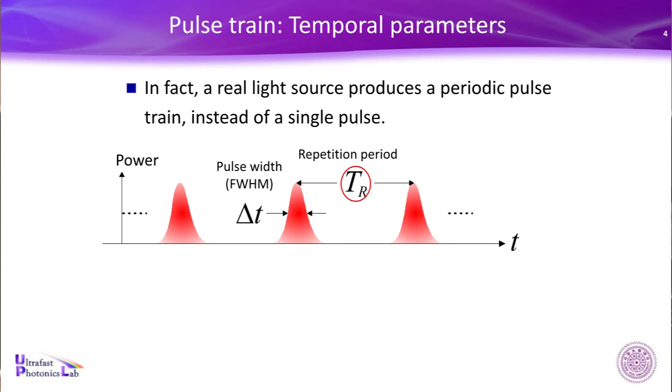And starting from Δt and TR, you have other parameters. For example, you can usually hear the term repetition rate. What is repetition rate? It's just the inverse of repetition period, one over TR.